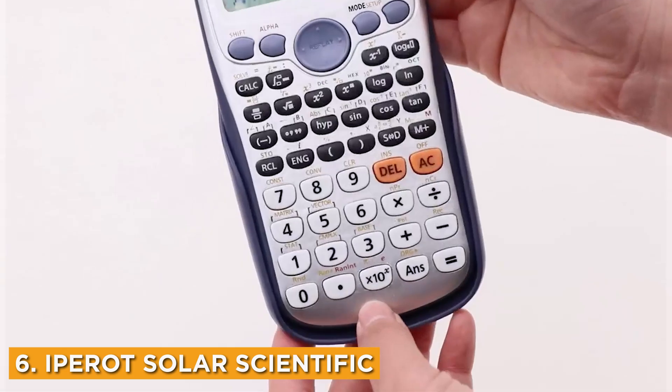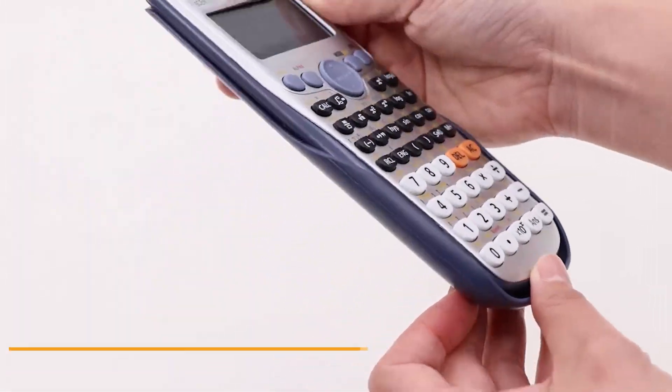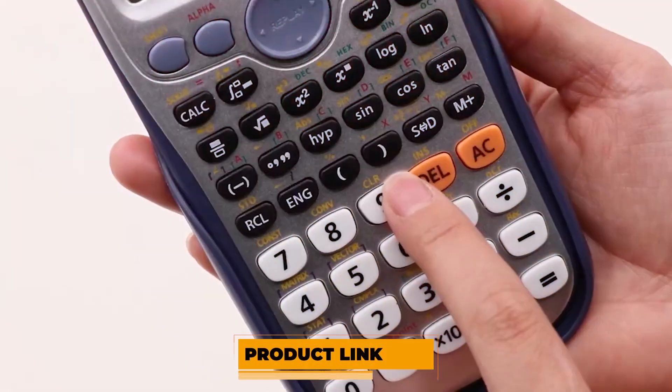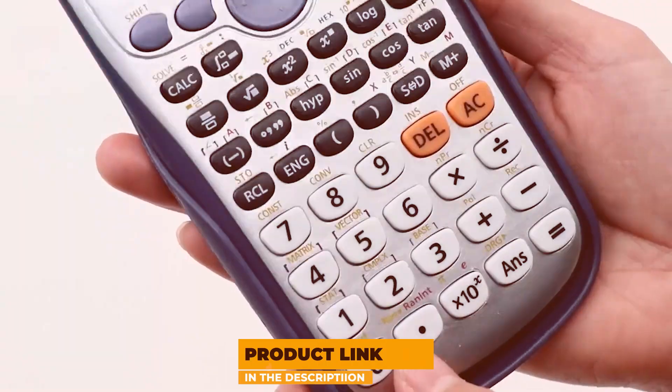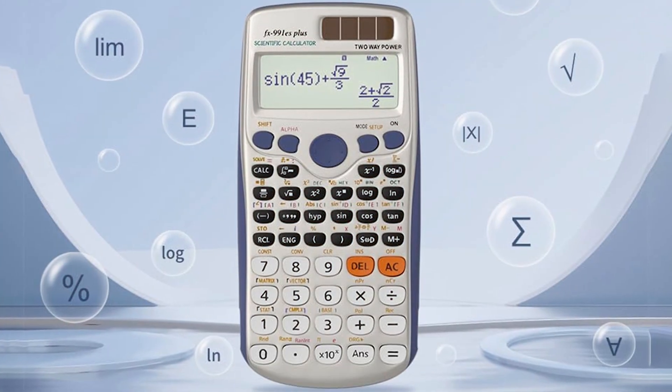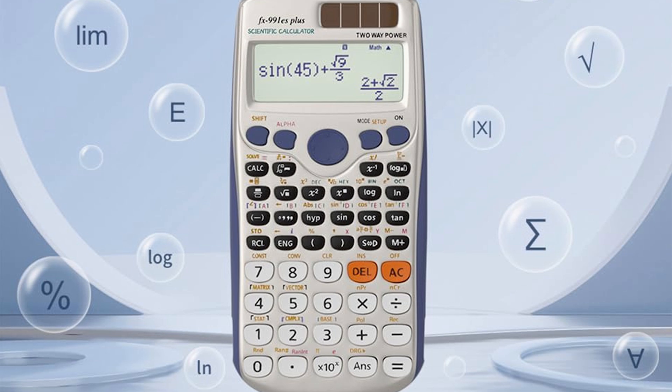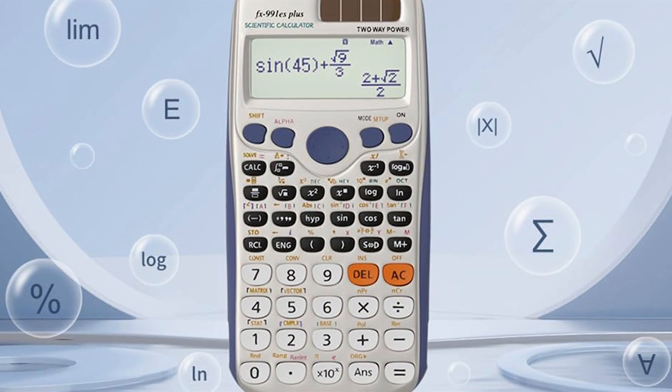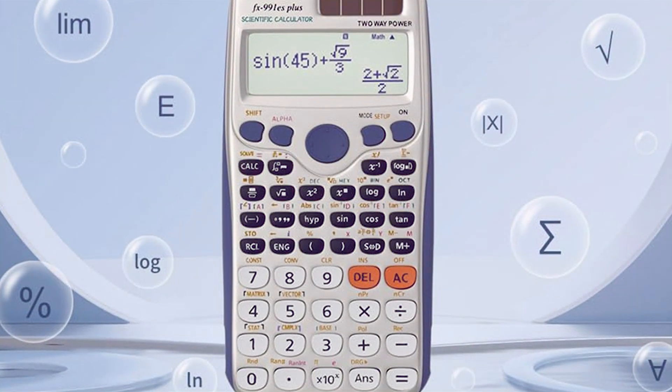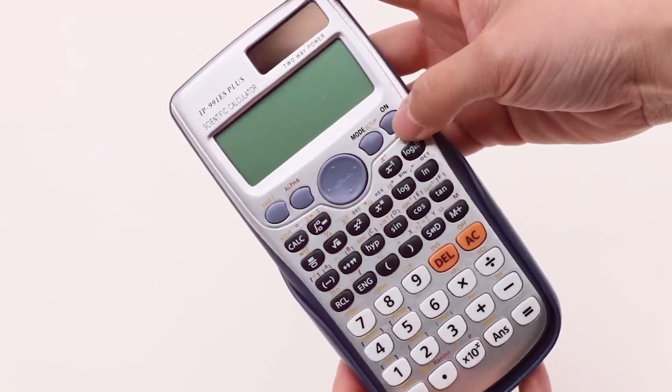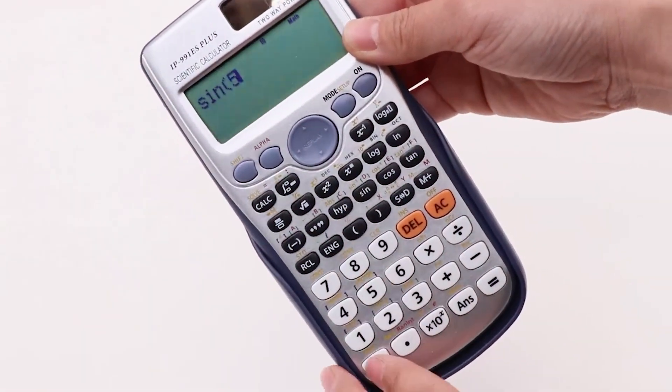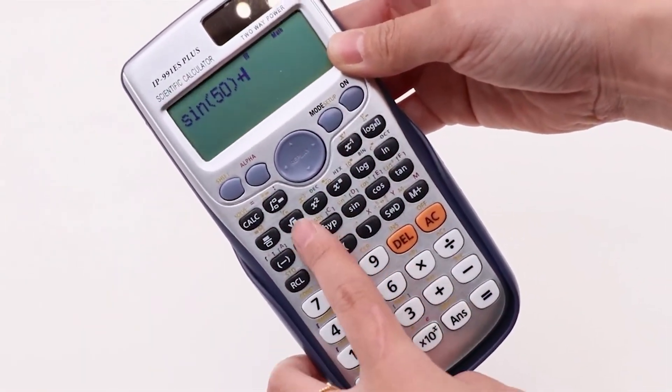Number 6: IPEROT Solar Scientific Calculator, which combines eco-friendliness with functionality. This calculator features a sleek, solar-powered design that not only reduces battery waste, but also ensures you have a reliable power source for everyday calculations. The large, dual-display screen is easy to read and can handle multiple calculations simultaneously, making it perfect for students tackling complex equations.